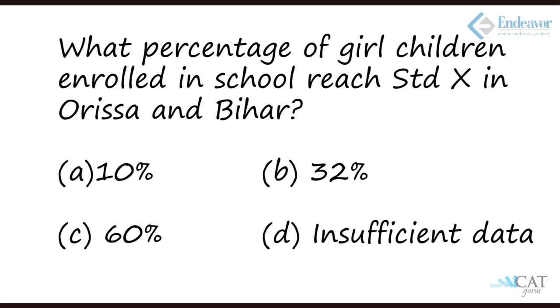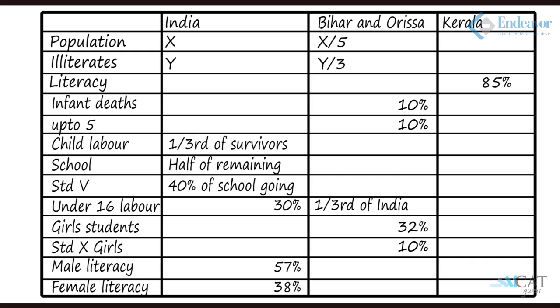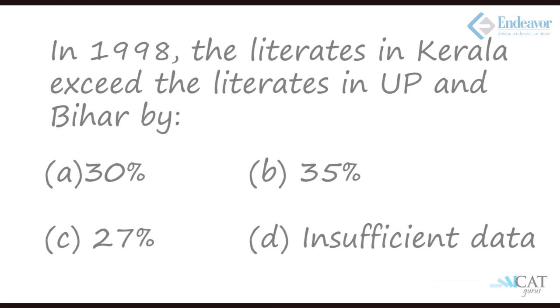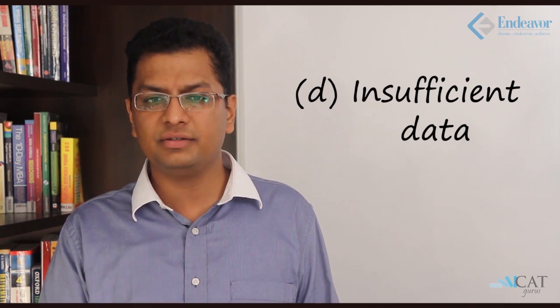Question 4: What percentage of girl children enrolled in school reach Standard 10 in Orissa and Bihar? In the previous question we linked from birth through infant death, age 5, and Standard 5 — but there is no relation between Standard 5 and Standard 10, so the data is insufficient. Question 5: The literates in Kerala exceed those in UP and Bihar by how much? UP was never discussed, so again insufficient data.